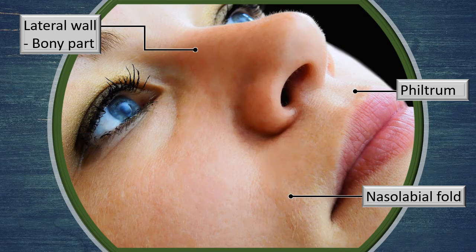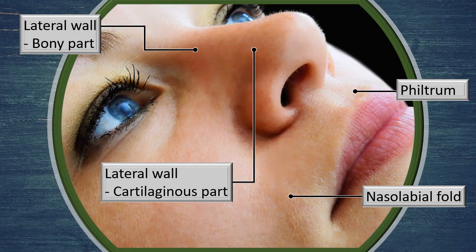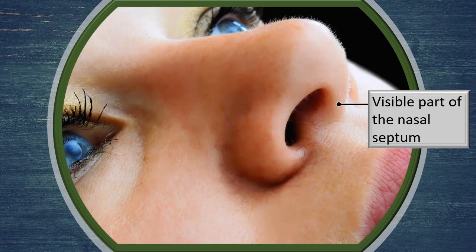The external nose is generally considered a triangular area; however, we could also look at it as a three-sided pyramid with a base below and an apex above. The two anterolateral sides of this pyramid form the lateral wall. The upper part of the lateral wall, although continuously covered with skin, has a bony base deep inside, while the lower part is cartilaginous — a distinct contrast between the upper and lower zones.